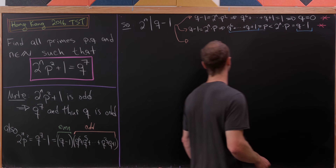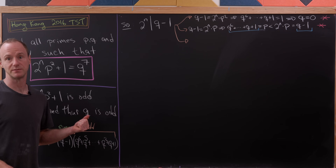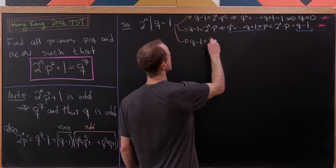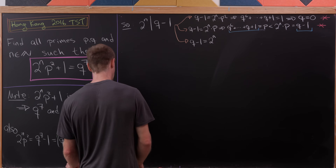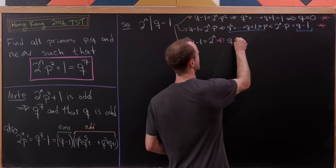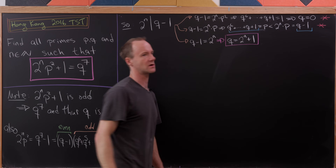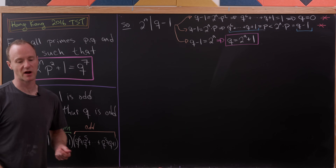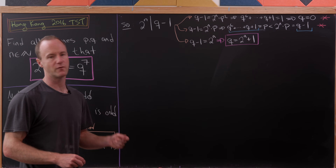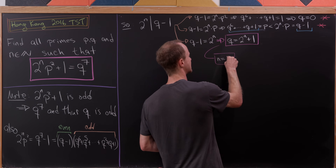Since those two cases are impossible, the only remaining possibility must be true: Q minus 1 equals 2 to the N, i.e., Q equals 2 to the N plus 1. This means Q is a so-called Fermat-type prime, and in fact N itself must be a power of 2, though we won't use that. Now let's eliminate the quick sub-case of N equals 1.